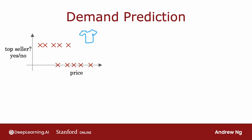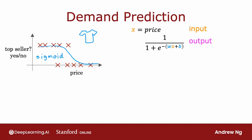If you know what's likely to be a top seller, you would plan to purchase more of that stock in advance. In this example, the input feature X is the price of the t-shirt — that's the input to the learning algorithm. If you apply logistic regression to fit a sigmoid function to the data, the output of your prediction might look like 1 over 1 plus e to the negative wx plus b. I'm going to switch the terminology a little and use the alphabet A to denote the output of this logistic regression algorithm. The term A stands for activation — a term from neuroscience referring to how much a neuron is sending a high output to other neurons downstream from it.